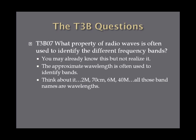What property of radio waves is often used to identify the different frequency bands? The approximate wavelength is often used to identify bands. For instance: 2 meters, 70 centimeters, 6 meters, 40 meters, 10 meters — all those band names are wavelengths, approximately. Some are a little more or a little less, but approximately those bands are the wavelengths of the radio waves.